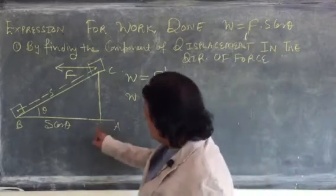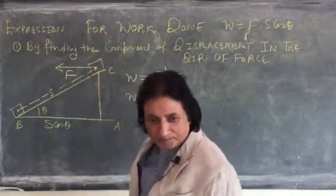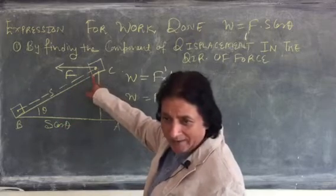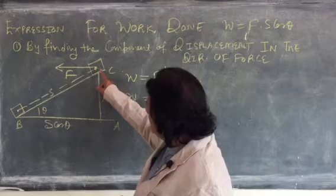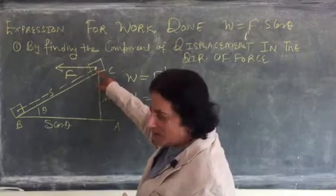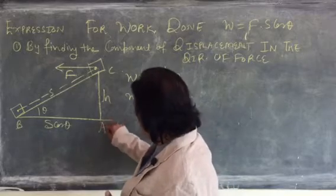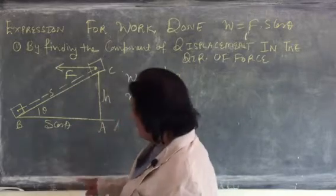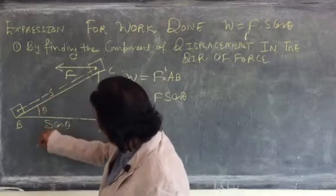Now, just imagine there is a block lying here. The block is lying here at a height h and the force is acting like this. The displacement is A to B. Now, A, B, C is an incline making an angle theta.